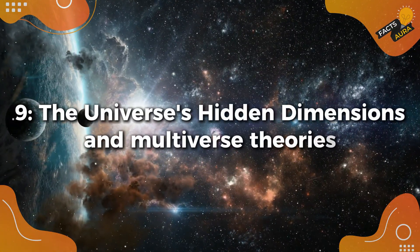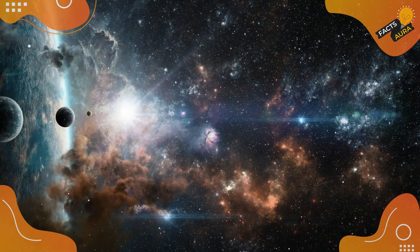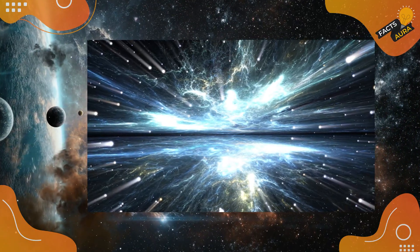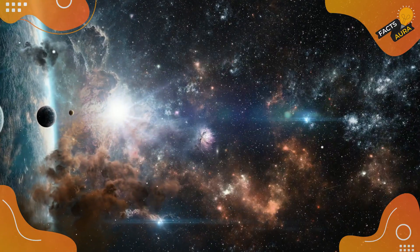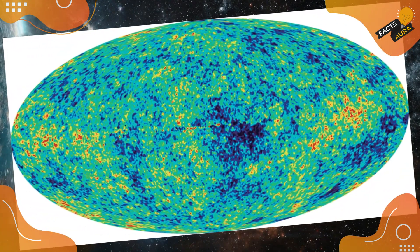The universe's hidden dimensions and multiverse theories. Could our inability to measure light's one-way speed be a clue to hidden dimensions or even other universes? Some physicists speculate that light's behavior might differ if we viewed it from outside our observable universe.